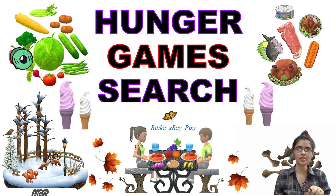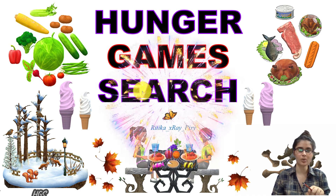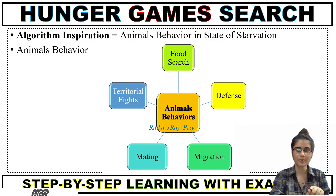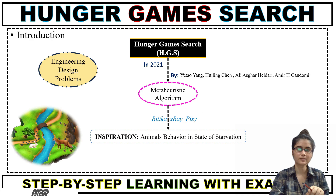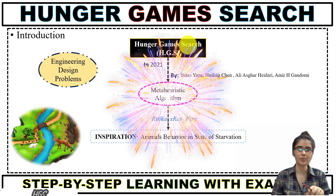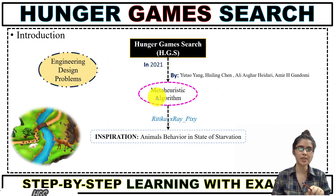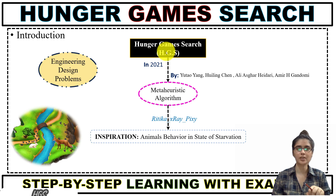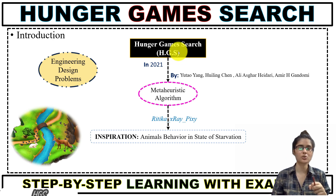Here we have a new metaheuristic algorithm: the Hunger Game Search optimizer. This algorithm is inspired by animal behavior in the state of starvation. Introduced in 2021, it is a population-based metaheuristic optimization algorithm. It was tested on 23 different benchmark test functions, applied to engineering design problems, and when compared with nine different optimization algorithms it provides efficient results.